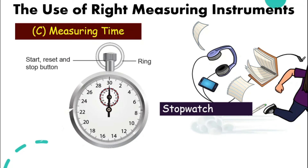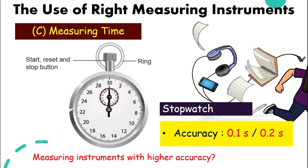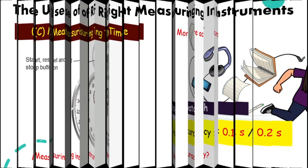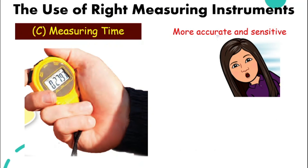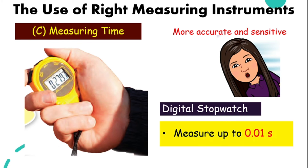We can measure time using a stopwatch. A common stopwatch has an accuracy of about 0.1 or 0.2 seconds. When we need higher accuracy, a more accurate and sensitive instrument is the digital stopwatch — we see this a lot on the field track when timing athletes, such as a hundred meter sprint. A digital stopwatch can measure up to 0.01 second, which is pretty sensitive.